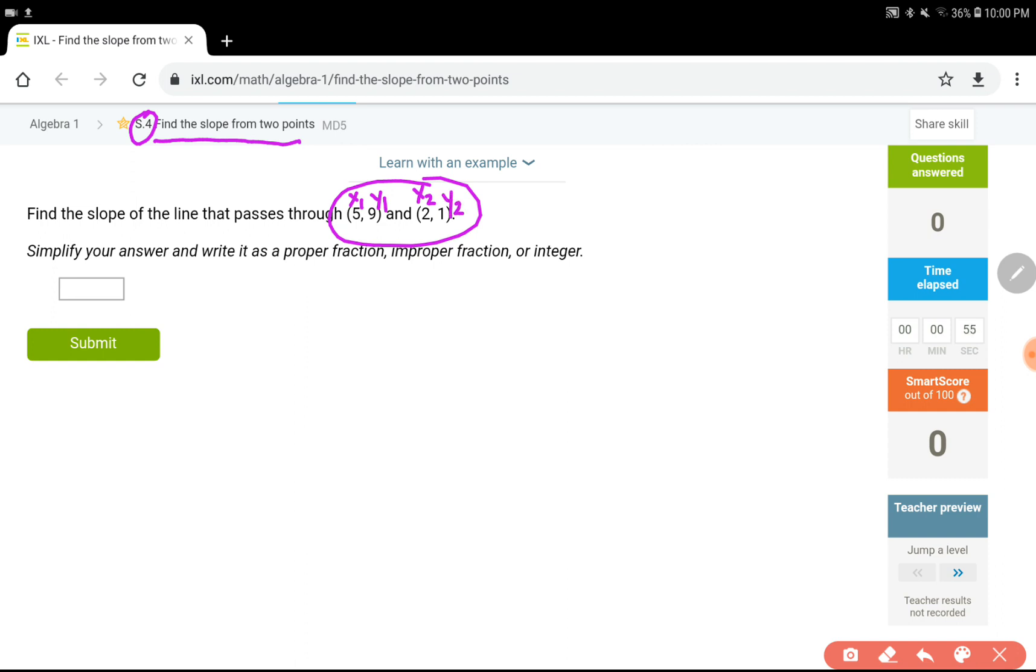plug these numbers into the formula of m equals y2 minus y1 over x2 minus x1. Y always should stay at the top because that represents the rise, and then x, the other x's, should go in the denominator because they represent the run. This one still is rise over run, actually.